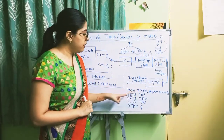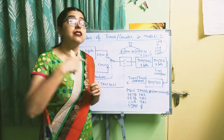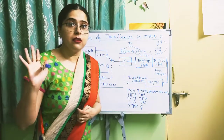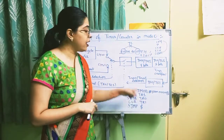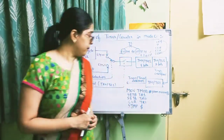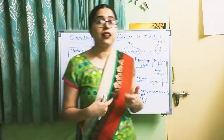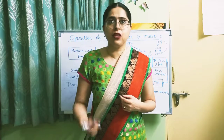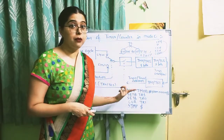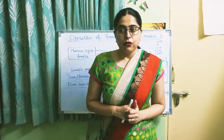SETB TR1 sets the Timer 1 run control bit to 1 and starts Timer 1. SETB TR0 sets the Timer 0 run control bit to 1 and starts Timer 0. CLR TR1 clears the Timer 1 run control bit to 0 and stops the timer. SJMP $ creates an infinite loop - it jumps to the same address repeatedly. These instructions demonstrate how to start, stop, and configure timer registers.